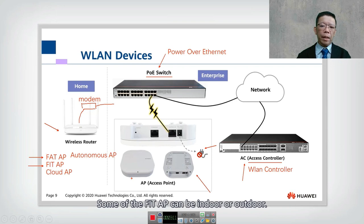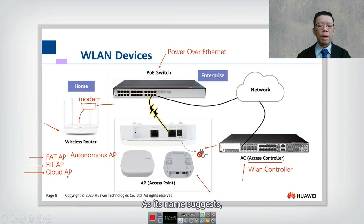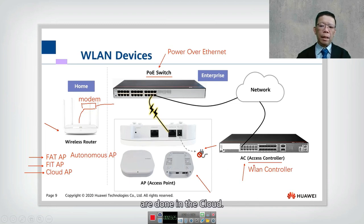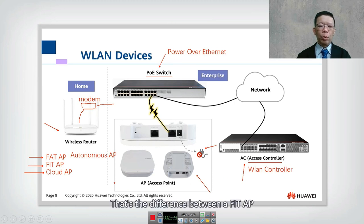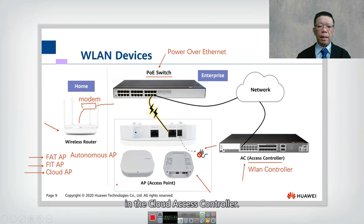Cloud AP is mainly used in medium to large enterprises. As the name suggests, management of the Cloud AP is done in the cloud — the AC is in the cloud. The difference between a Fit AP and a Cloud AP is that in Cloud AP, the AP can perform some control on its own, while most of the control is done in the cloud.